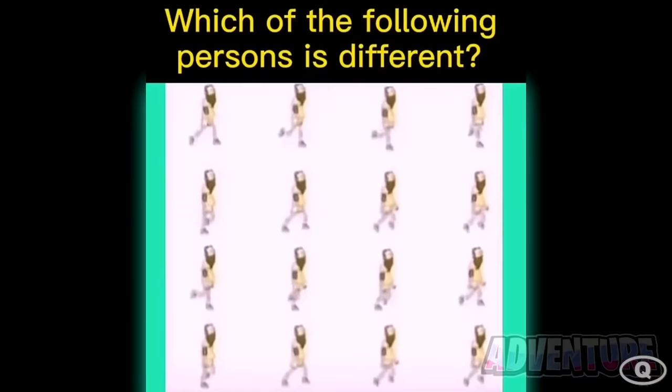Alright, so the odd man out is right here. This guy is running backwards. Were you able to spot him or was this too hard?